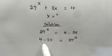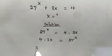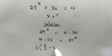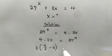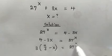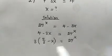In our next step, let us factor out the coefficient of x here, which is 3. So if we factor out 3, we have 4 over 3 minus x, and this will be equal to 27 raised to the power of x.